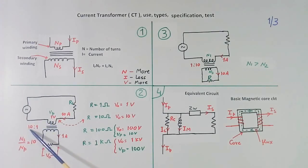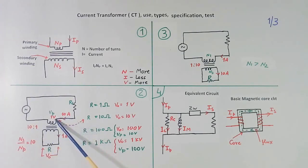Here we have a CT of ratio 10 is to 1. 10 is to 1 means if primary current is 10 ampere, secondary current will be 1 ampere. And turn ratio will be reversed 10 is to 1. Secondary turn will be more. If turn is more, current is less. Because here current is less, here turns are more. And we have connected a resistor across secondary. Now when 10 ampere is flowing here, 1 ampere will flow here. Suppose we connect R equal to 1 ohm. So 1 ampere into 1 ohm is equal to 1 volt.